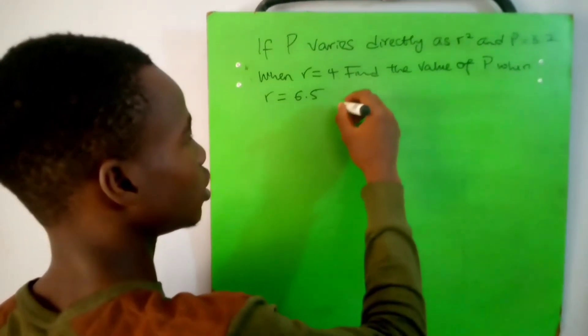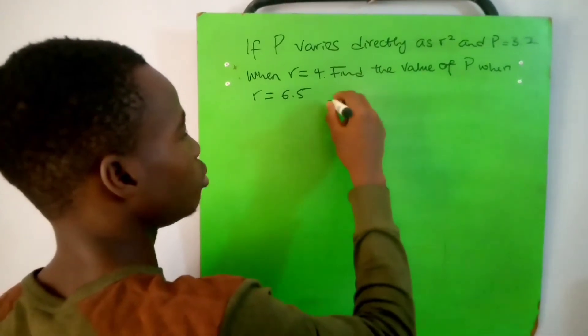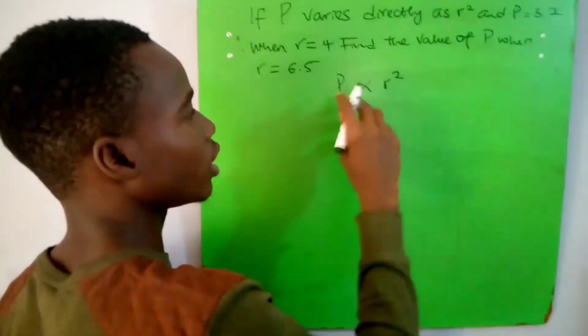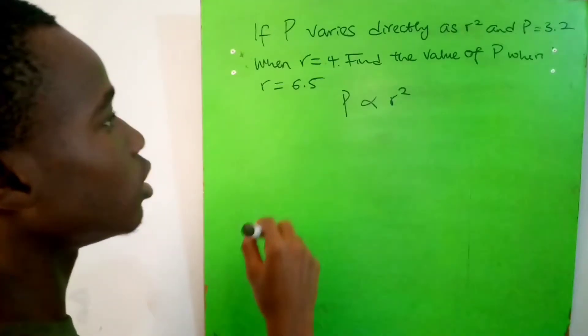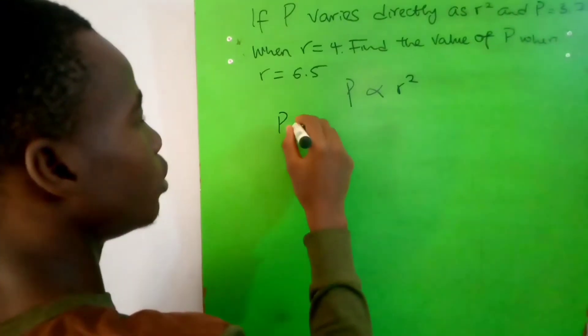What it says is P varies directly as r squared. So written in math language: when we have this, when we put an equality sign, of course a constant has to appear.